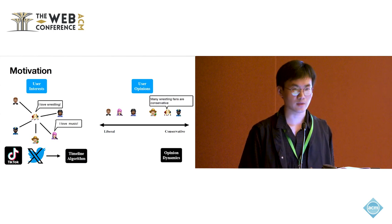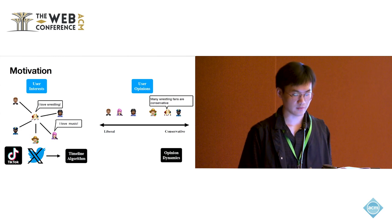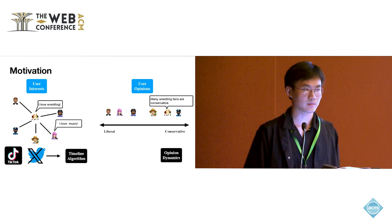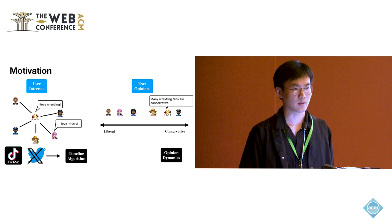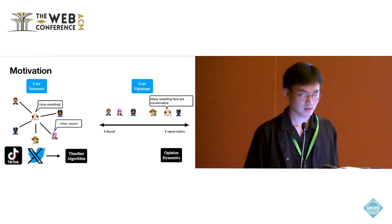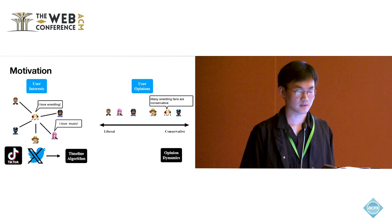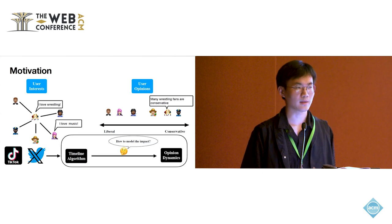For example, many wrestling fans are conservative. And opinion dynamics models are very popular tools used to study the polarization issues on social networks. So the problem we would like to ask is how could we model the impact of timeline algorithms on opinion dynamics?